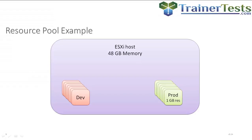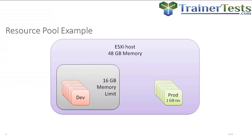So let's take a look at a resource pool example. Here we see an ESXi host with 48 gigabytes of memory. Within it, I've got a group of virtual machines called dev and another group called prod. The prod virtual machines are configured with a one gig memory reservation. Here we've created a resource pool for the dev virtual machines — a simple resource pool that contains all the dev VMs and has a 16 gig memory limit.